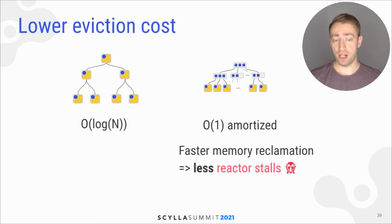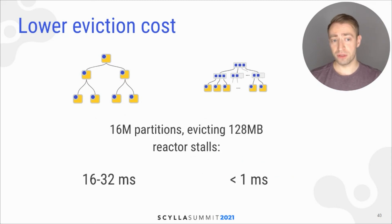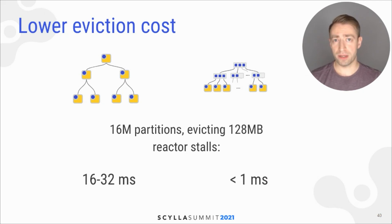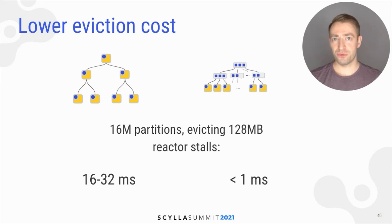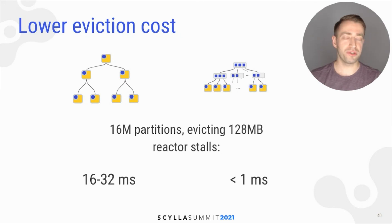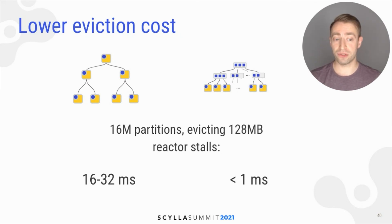If you have a large enough request, you may get reactor stalls. We saw an improvement here: with 16 million partitions and when evicting 128 MB at once, we saw reactor stalls with the old data structure on the order of 16 milliseconds. With the new data structure, we saw no stalls with the reactor stall threshold set to 1 millisecond.